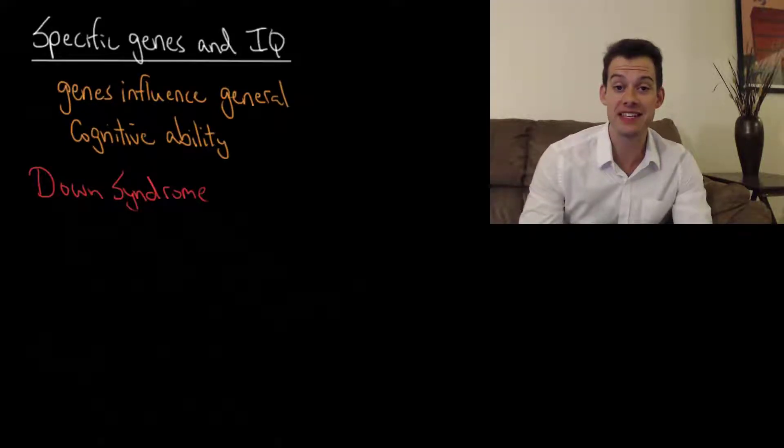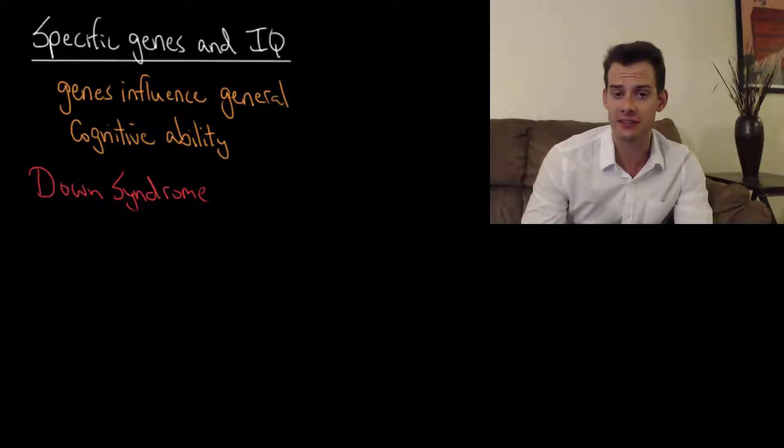Hi, I'm Michael Correa and this is Psych Exam Review. In the previous video we looked at the heritability of intelligence and we saw that genes are an important part of the explanation for why people have different IQ scores. So in this video I want to look at some specific examples of gene interactions that are known to influence cognitive ability.